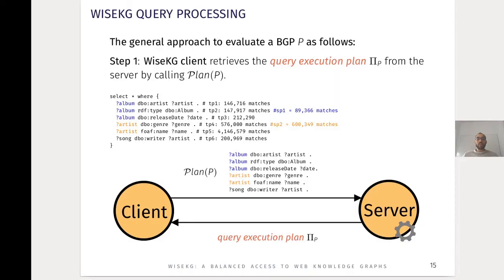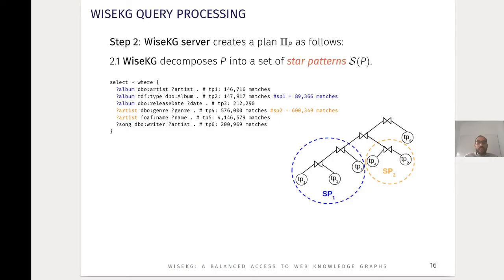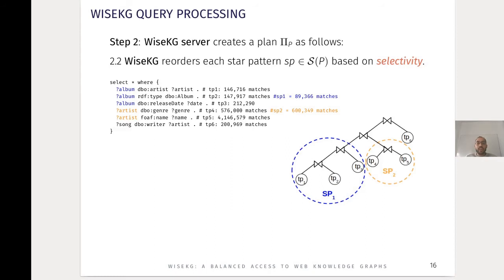Here we explain the general approach of YSKG to evaluate a BGP. First, the SmartKG client sends a request to the server to retrieve a query execution plan for the input BGP. The YSKG server then creates a plan by first decomposing the input BGP into a set of star patterns. For example, in this query we have two stars — one in blue and one in orange — plus TP6 which is a single triple pattern. After the decomposition step, YSKG server reorders the star patterns based on selectivity; in our example SP1 has higher selectivity than SP2, so we start with SP1 in the join first.